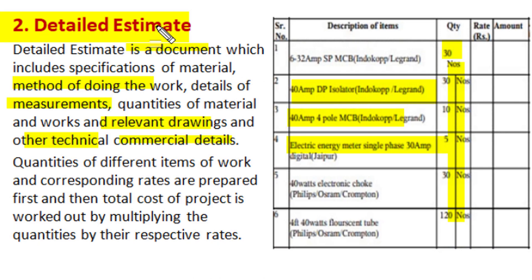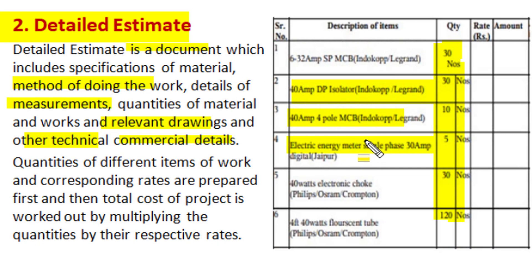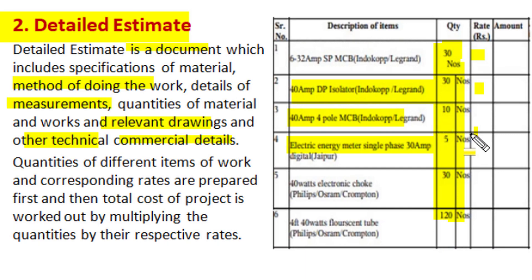In a detailed estimate, first, after specification of all material and works, the quantity is obtained. Then, corresponding to material or work detail, respective rates are assessed, and by multiplication of rate with quantity, we can find out the amount of all individual material and works. The summation of all those will give us the cost of the project.